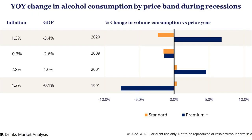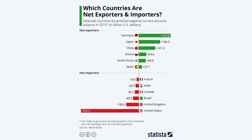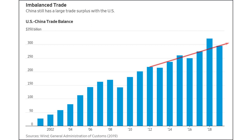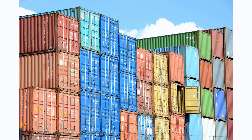However, this rapid rise in Japan's economic power created tensions with the United States. American industries faced increasing competition from Japanese companies, leading to concerns about job losses and trade imbalances. The US government began to question Japan's trade practices, particularly its alleged protectionist policies. One of the key issues that fueled the trade war was Japan's trade surplus with the United States — Japan consistently exported more goods to the US than it imported, resulting in a significant trade imbalance.